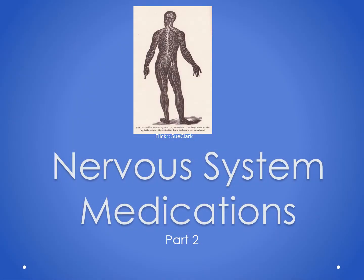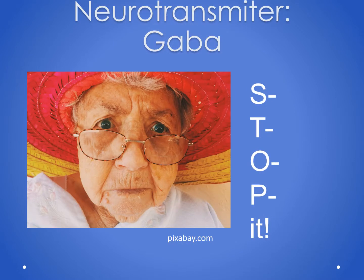This is part two of the PowerPoint lectures for nervous system medication. As we begin this section, I want to stop and just review neurotransmitters quickly. A neurotransmitter is simply a brain chemical, and a lot of our medications that deal with the nervous system affect these brain chemicals.